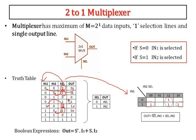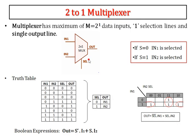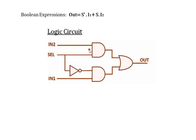I am taking the K-map here with 3 inputs: IN1, IN2, and the selection line — giving a 2 power 3, 8-cell K-map. This is the Boolean expression derived from the K-map. This is the logic circuit for the 2-to-1 multiplexer corresponding to that Boolean expression.